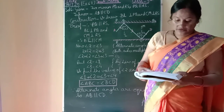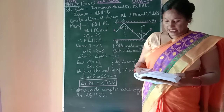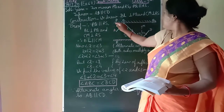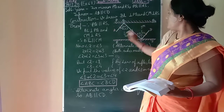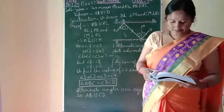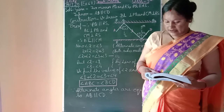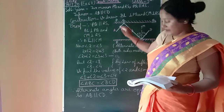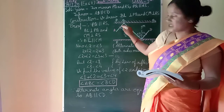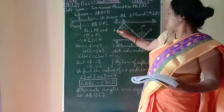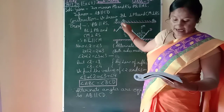In our figure 6.70, PQ and RS are two mirrors placed parallel to each other — PQ parallel to RS. And an incident ray AB strikes the mirror PQ at point B.